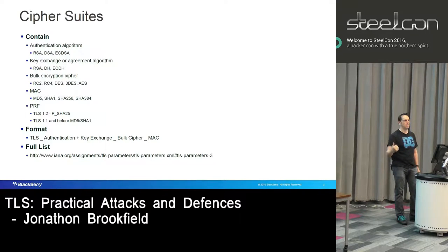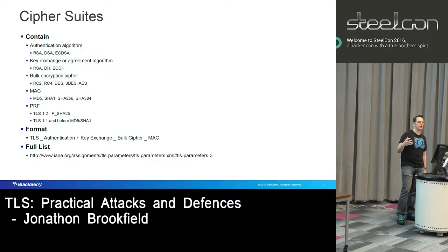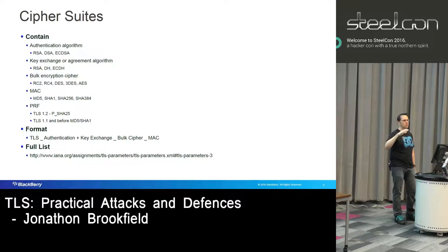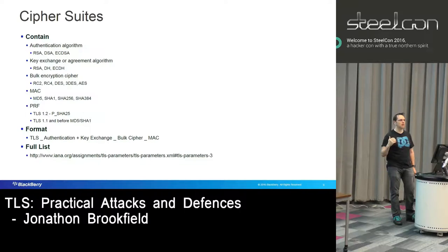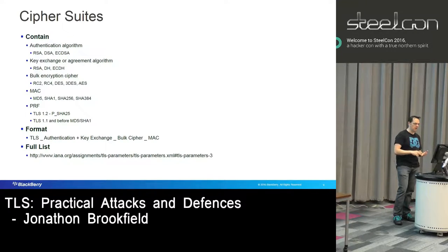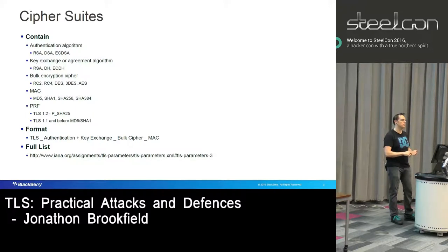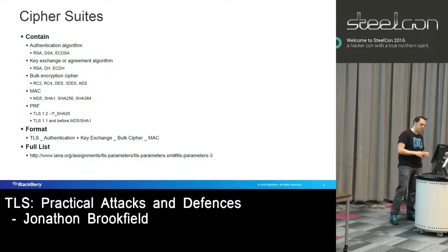You also have Diffie-Hellman and elliptic curve Diffie-Hellman. If you've heard of perfect forward secrecy, these key agreement algorithms allow you to have the server's key compromised but not be able to decrypt previous traffic. Having done the key agreement, the client and server then switch to using bulk encryption algorithms — RC4, DES, TripleDES, AES. There are also Camellia and Seed, which are algorithms from other countries.